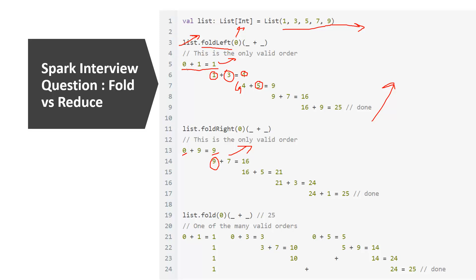Running through the chart for foldLeft: the seed value acts as the first element, then the iterator points to the 0th element of the list and the operation is applied. The output of that becomes the first argument in the second invocation, and the second argument is the next current element of the list — and this is how the entire iteration proceeds.